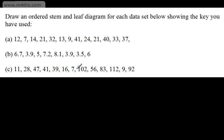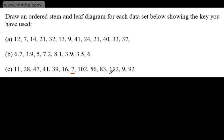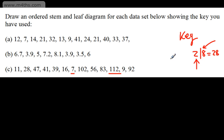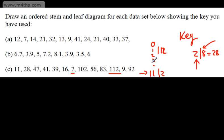Quickly looking at the third example: the lowest value is 7 and the highest is 112. I'd write the key as 2/8 equal to 28 — so tens as the stem and units as the leaf. The stems would go from 0 up to 11, because 11 tens is 110, and then 2 as the leaf gives 112. Students sometimes get this wrong — 11 represents eleven tens, which is 110, plus 2. Make sure you're getting these correct.